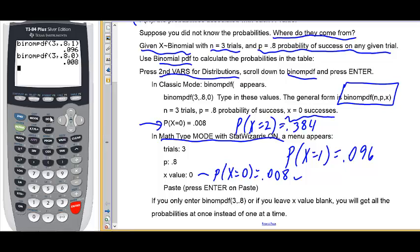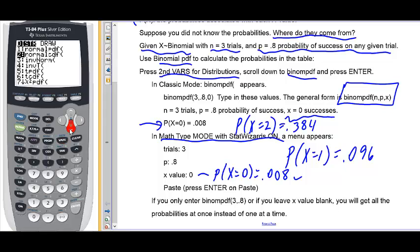Last but not least, if I go back into distributions and go down to binomial pdf. And this time, if I leave x value cleared out with nothing there and hit paste. That's what it's going to do. It's going to give us all of the probabilities.